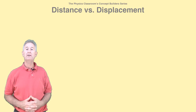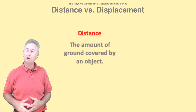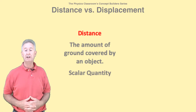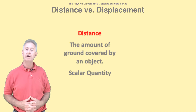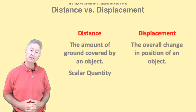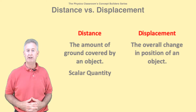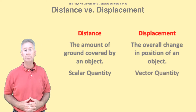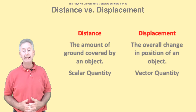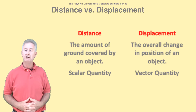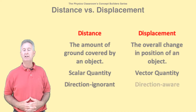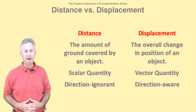For an object moving along the ground, the distance is the total amount of ground that is covered. Distance is a scalar quantity — scalar quantities are fully described by magnitude, or numerical value. Displacement is quite different; it's defined as the overall change in position of an object. It is a vector quantity, fully described by both a magnitude and a direction. Scalars like distance are direction ignorant, but vectors like displacement are always aware of direction.